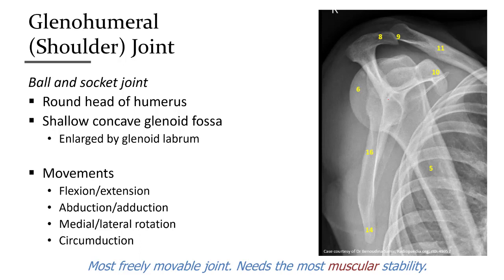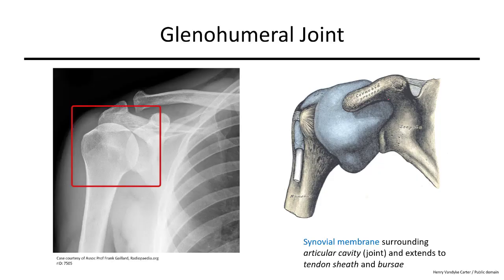The round head of the humerus is cupped by the glenoid fossa of the scapula. This joint can flex, extend, abduct, adduct, rotate, and circumduct. Many muscles contribute to these motions, and musculature is one of the primary ways to increase the stability of this joint. In the x-ray we can see the relationship between the head of the humerus and the glenoid fossa. On the right we can see that this joint and its associated structures are surrounded by a synovial membrane that includes the joint capsule as well as tendon sheaths and bursa.